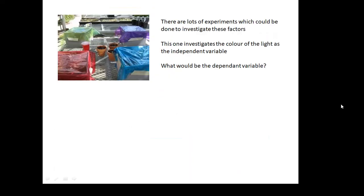There are lots of different experiments you could do to investigate these factors. In this particular experiment, they're investigating the color of the light to see how that will affect plant growth. So the independent variable would be the color of the light, or the wavelength. What do you think a good dependent variable would be if we're measuring the rate of growth — what would tell you how quickly the plants are growing?